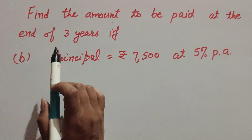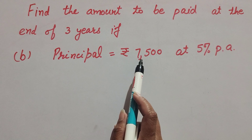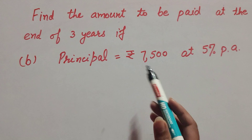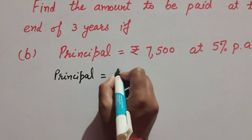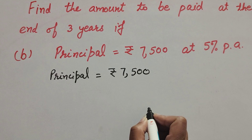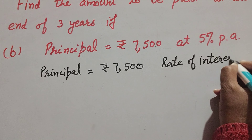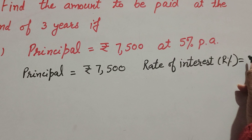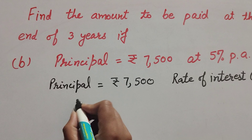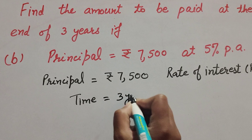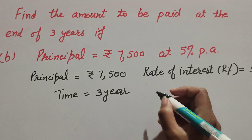Hello friends, welcome to my channel. In this video we find the amount to be paid at the end of three years if principal is rupees 7500 at five percent per annum. The given values are: principal is equal to rupees 7500, rate of interest R is equal to five percent per annum, and time is three years.